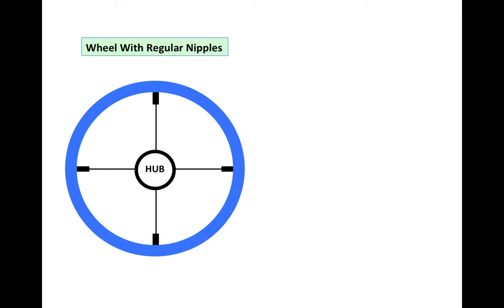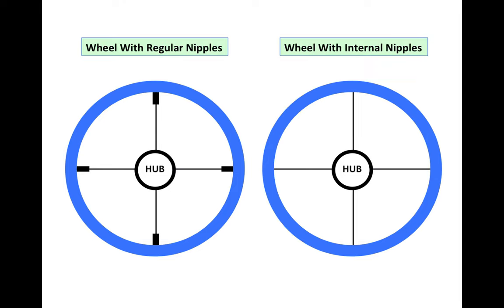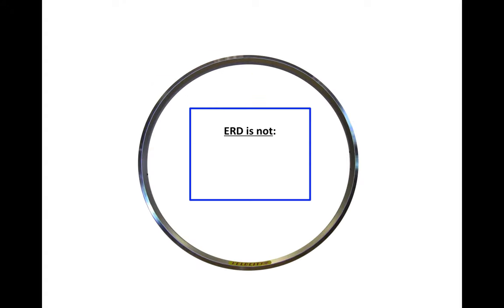We'll look at a wheel with regular nipples and then a wheel with internal nipples. Let's start with a wheel that has regular nipples. ERD is not the internal rim diameter or the external rim diameter or the bead seat diameter.